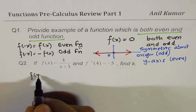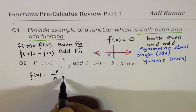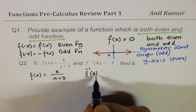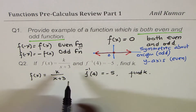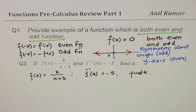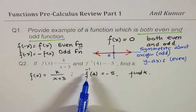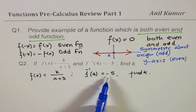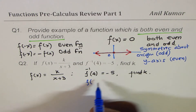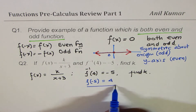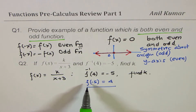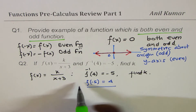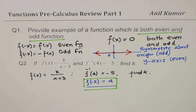The question is f(x) = k/(x+3) and f⁻¹(4) = -5; we need to find k. I've seen students finding the inverse and wasting a lot of time on the final exam. The key insight: f⁻¹(4) = -5 means f(-5) = 4. Once you understand this, it's a simple job.